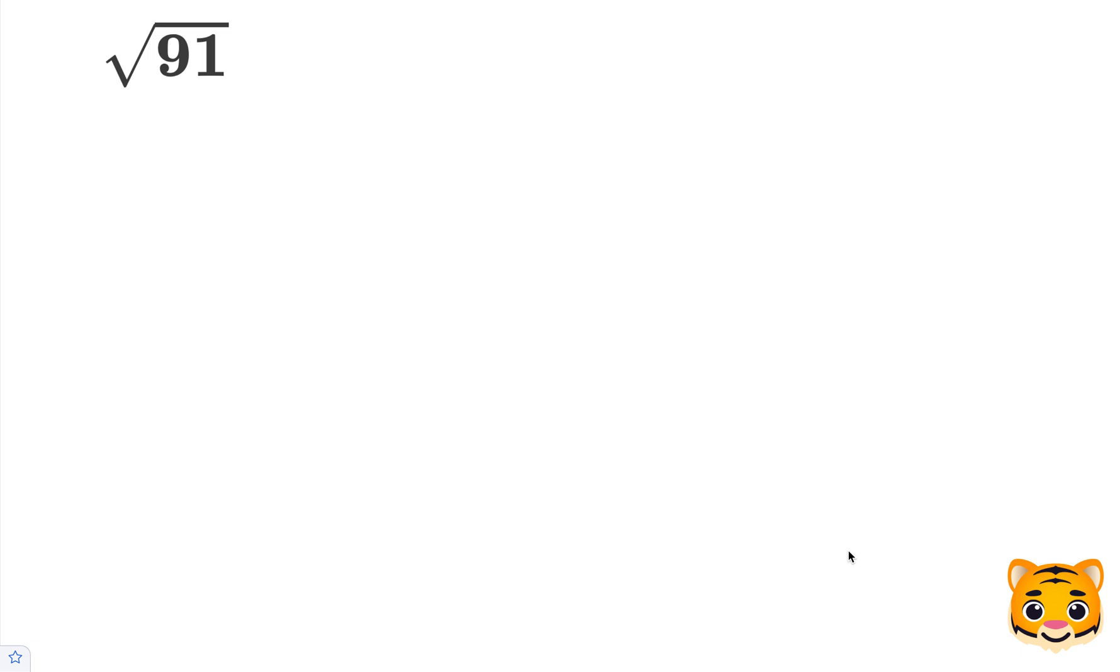In this example, we will be evaluating the square root of 91. To do this, we're going to look for a decimal to the nearest tenths place that approximates the square root.